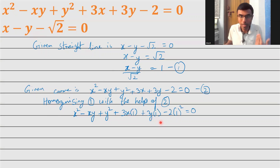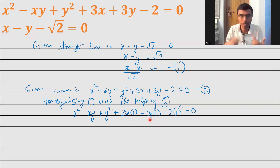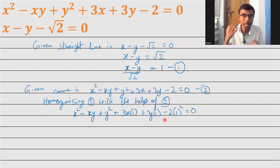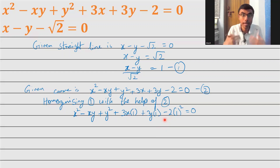Likewise, 3y into 1 gets one more degree. The constant has degree 0, so I need a degree of 2 — that's why I'm multiplying it by 1 squared. Now, what am I going to replace this 1 with? I'm going to replace it with x minus y by root 2.